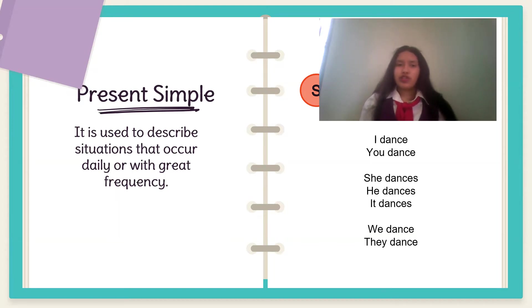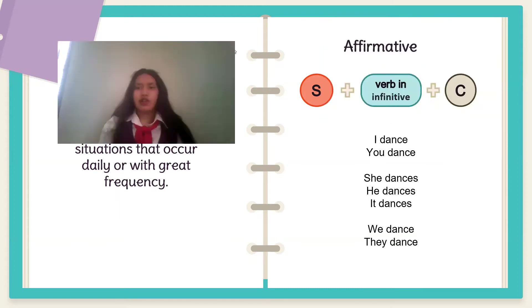The present simple is used when you describe a situation occurred daily or frequently. In affirmative form is subject plus verb plus complement.